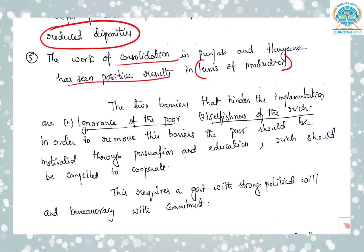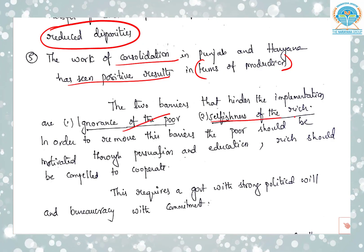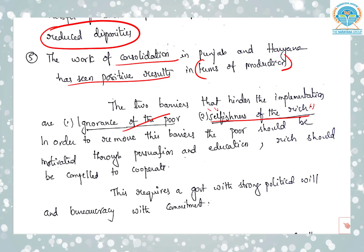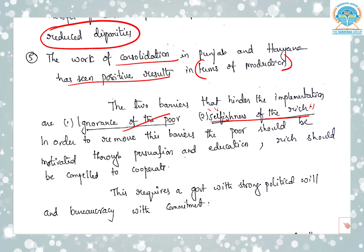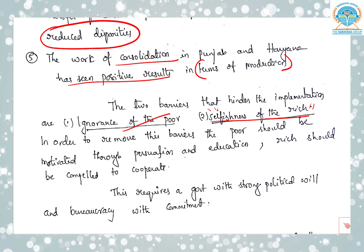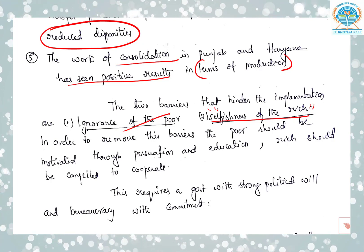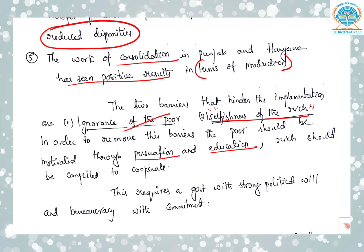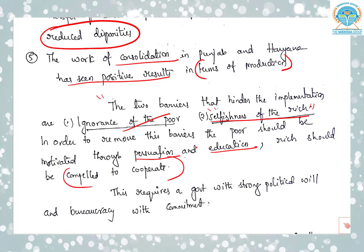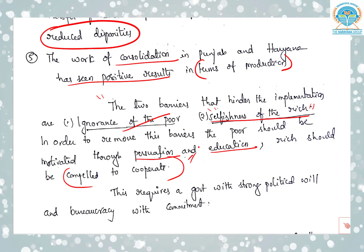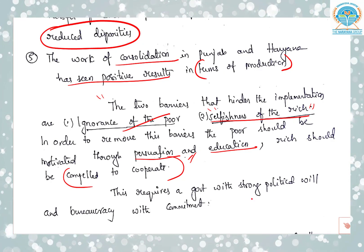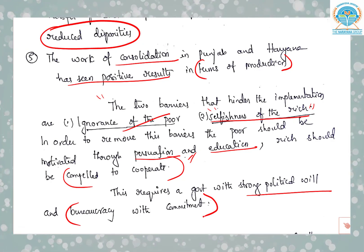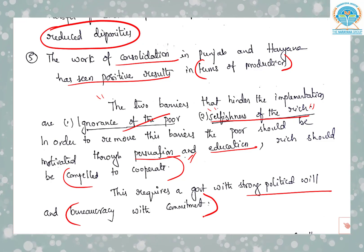In conclusion, the two barriers that hinder the implementation of land reforms are: ignorance of the poor and selfishness of the rich. Hence, one of the recommendations of the Planning Commission is the organization of beneficiaries. It is the responsibility of the government as well as civil society to bring awareness among the poor about their rights so that they will mobilize to fight for them. To remove these barriers, the poor should be motivated through persuasion and education, and the rich should be compelled to cooperate. This requires a government with strong political will and a bureaucracy with commitment.